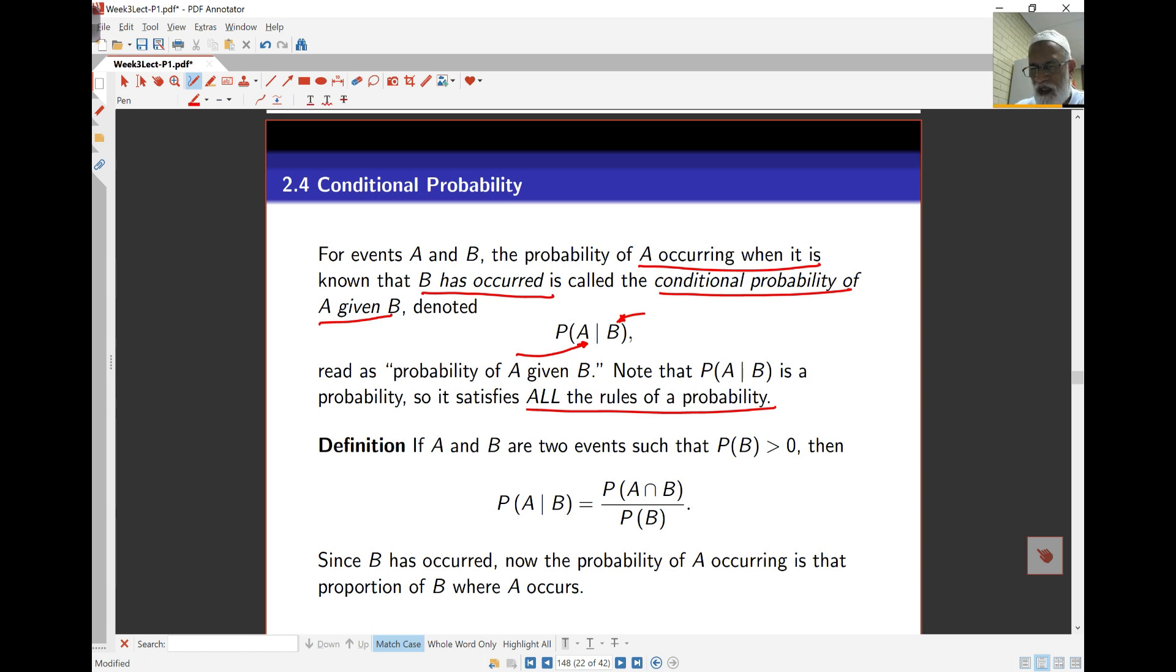the definition here is if A and B are two events such that probability of B is bigger than 0, then probability of A given B is probability of A intersect B divided by probability of B.